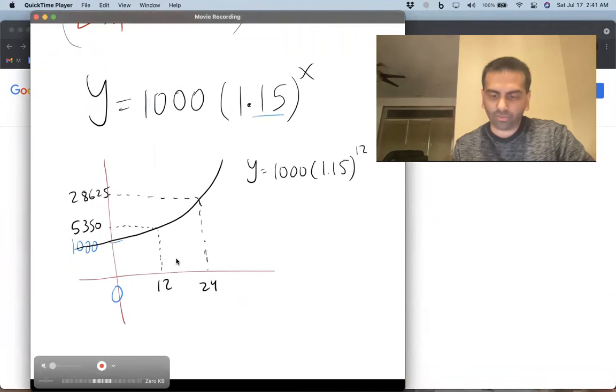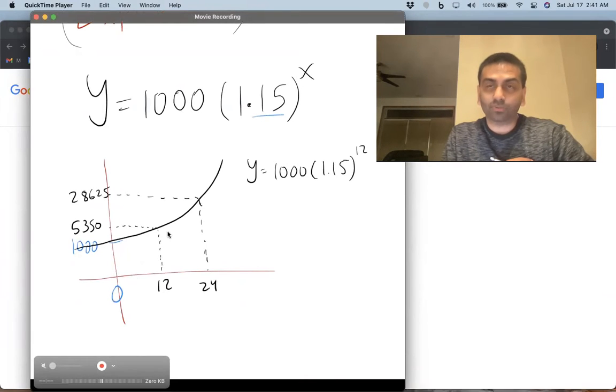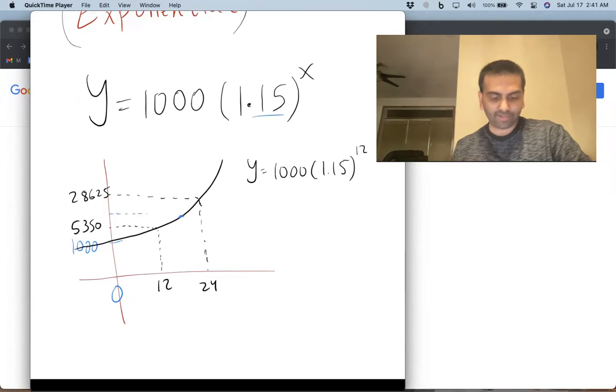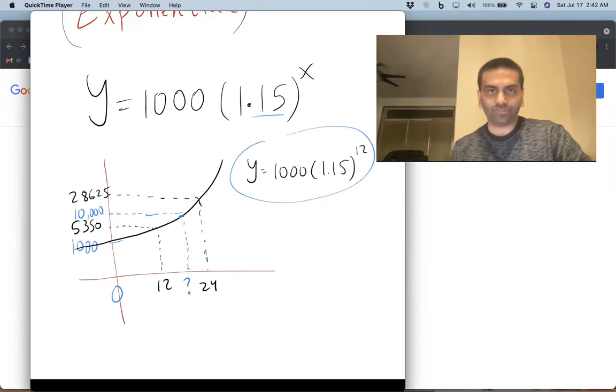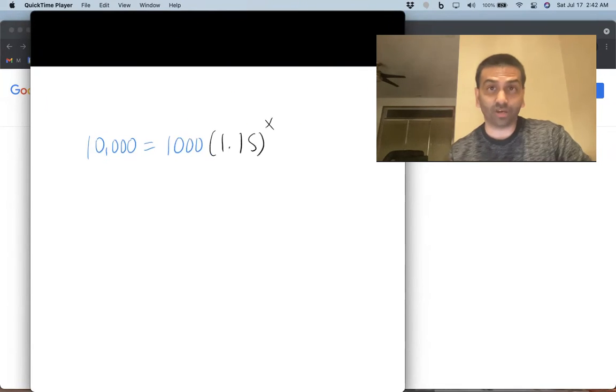So now, what if on the other hand, a question asked, exactly when, how many months later were there exactly 10,000 patients? Maybe you have some funding that you get for extra support if you have more than 10,000 patients. So if you wanted to predict in which month would you expect that funding to come in, that's really just saying in what month, for what x value, is the y 10,000. So now that's taking this equation and plugging in 10,000 for y. So let's do that out here. So this equation, now we have 10,000 for the y and equals 1,000, and it was 1.15 to the power of x. And it's the x that we're solving for now.